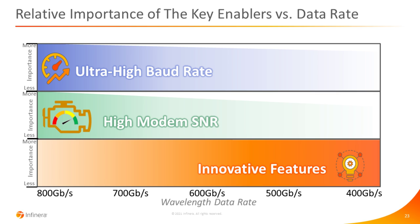To wrap up on these three factors for performance: at 800G, you really need everything working — the highest possible baud rate to reduce bits per symbol leveraging PCS, you need to minimize the noise inside the optical engine because you're so sensitive to noise at these very high data rates, and you need all the features like Nyquist subcarriers and probabilistic constellation shaping. At lower data rates, the ultra-high baud rate is still important — you still get a big benefit in terms of capacity reach — but a 15% increase in baud rate gives around 20% reach gain at 400G versus 300% at 800G. Similarly, modem SNR is a little less important at lower data rates where you're a little less sensitive to noise and more governed by the noise coming from the fiber.